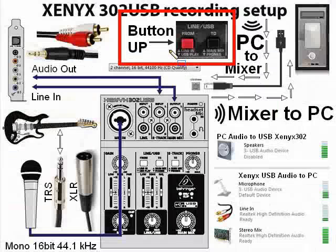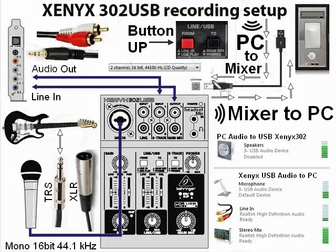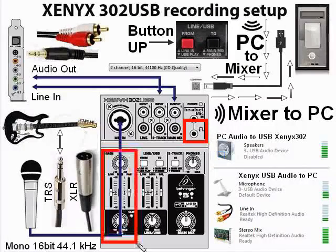Once you have USB play set up, you have audio coming through the USB, and once you start music on your PC to practice, you should hear it in your headphones. Then you can mix your instrument, mic, bass, or whatever you have hooked in and adjust it accordingly.